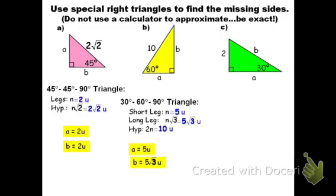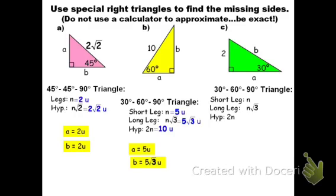Turning to the last problem, letter C — the green triangle. Again I see a 30 and a 90, so we have a 30-60-90 triangle. This time, the piece that's 2 is away from the 30-degree angle, meaning they gave me the short leg, so n equals 2. That's the easiest case — just plug in. The long leg is 2 root 3 units, and the hypotenuse is 2 times 2, which is 4 units. A is away from the 60-degree angle — the long leg — so a is 2 root 3. B is away from the right angle, making it the hypotenuse, which is 4 units.